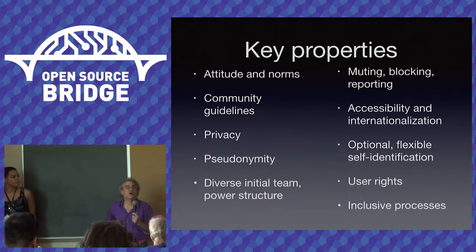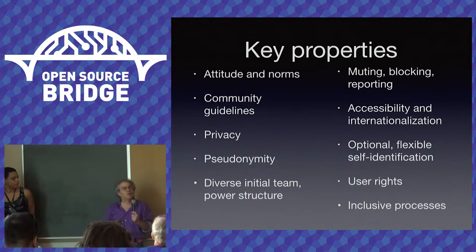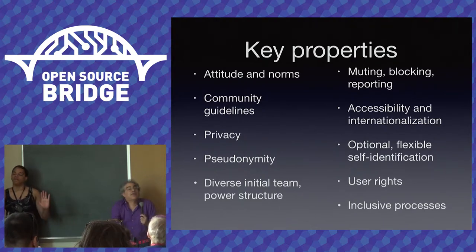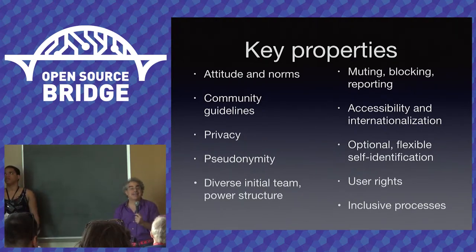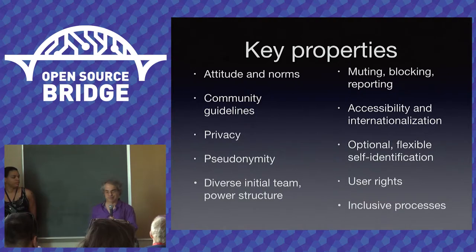Inclusive processes — Kronda gave a great counter-example when she talked about Twitter introducing block lists. Yay block lists — but wait, why didn't they talk to any of the people who have been working on this, the people who know better than anybody else what's needed? The answer is: if you don't do that, you're going to be noticeably less hospitable to diversity.